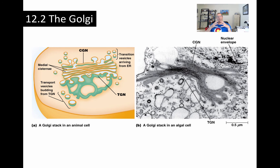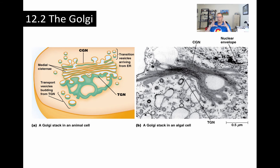The Golgi is a series or set of flattened membrane-bounded cisternae, and the series of cisternae is usually three to eight structures — that's called a Golgi stack. Some cells will have just one large stack or a few smaller stacks. Other types of cells, especially cells involved in secretion, can have hundreds or in some cases thousands of stacks. You're going to see relationships between the number of structures and the function or type of the cell.